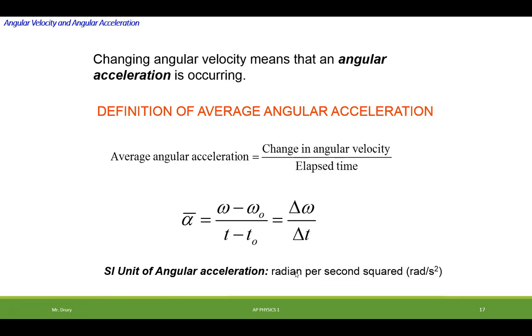The units would be radians per second squared, because omega, or angular velocity, is measured in radians per second divided by seconds again, so you get radians per second squared.